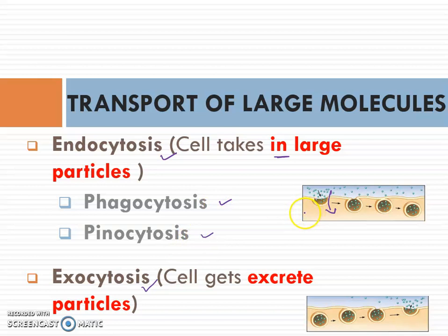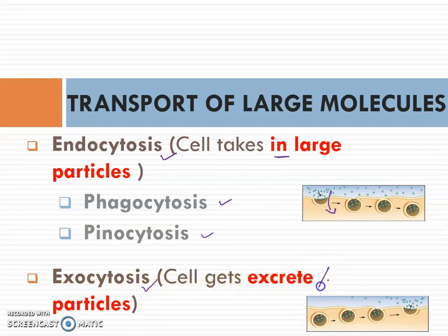For the other type of large molecule transport, which is exocytosis, we can see it as the cell excreting or releasing particles out. This means that large particle molecules are going to be out from the cell, or excreted out from the cells.